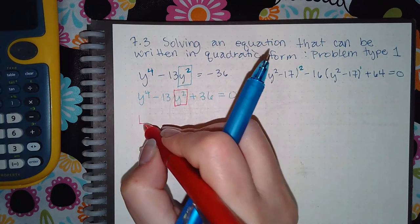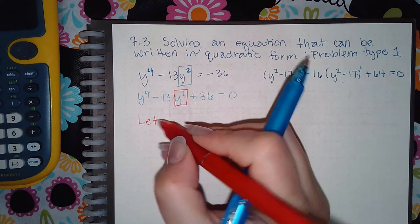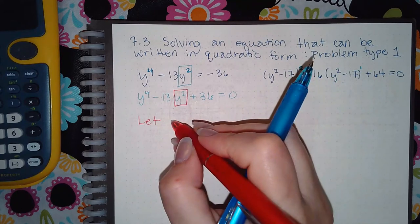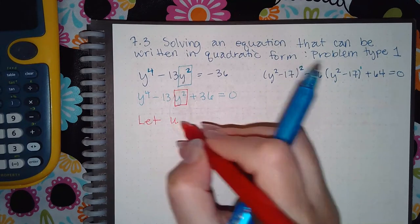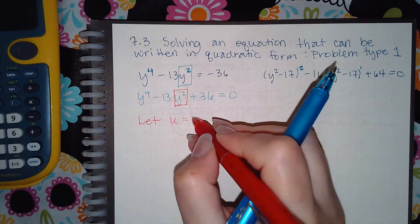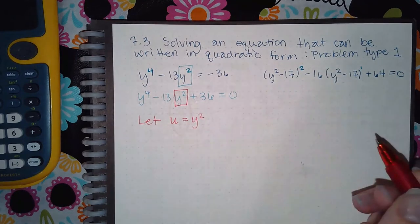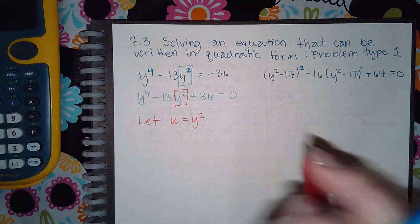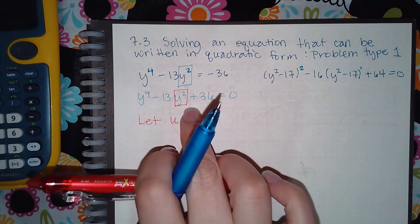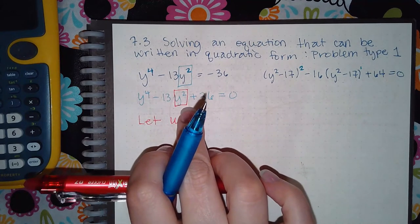So what you'll do is you'll say, let some other letter, we'll use u, let u equal y squared. Whatever that middle term is, that middle expression. Not the coefficient, just the expression with the variables in it.